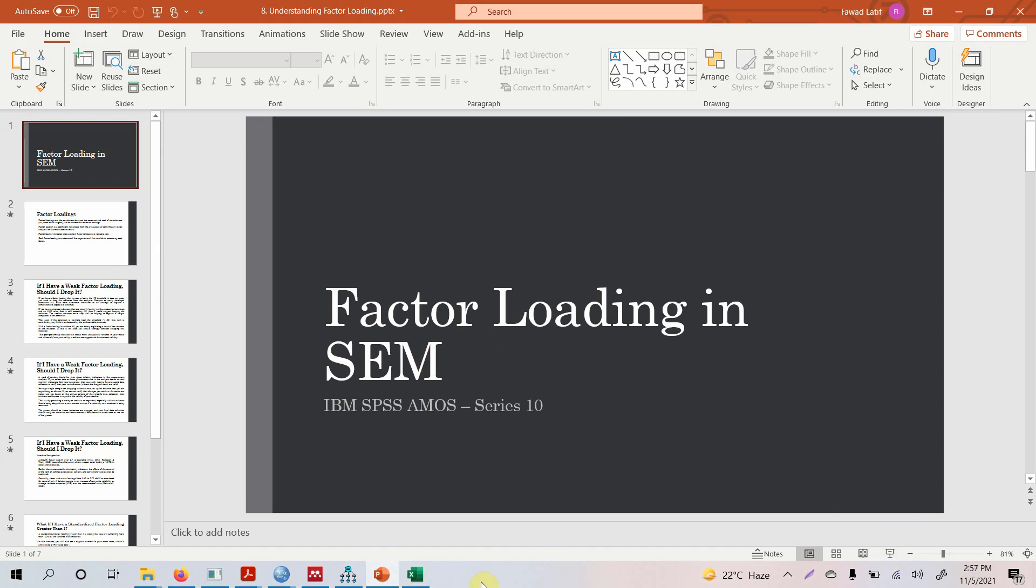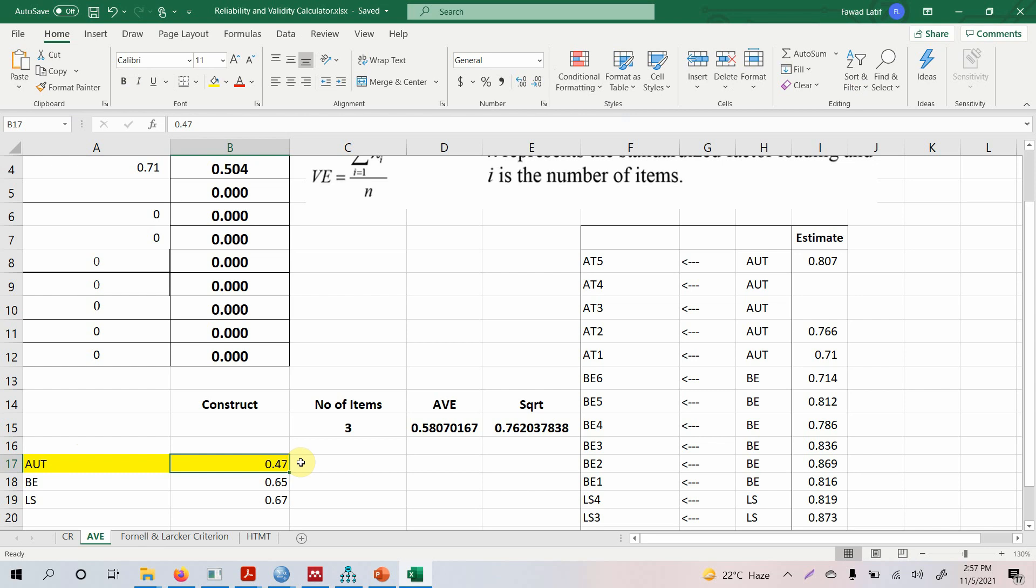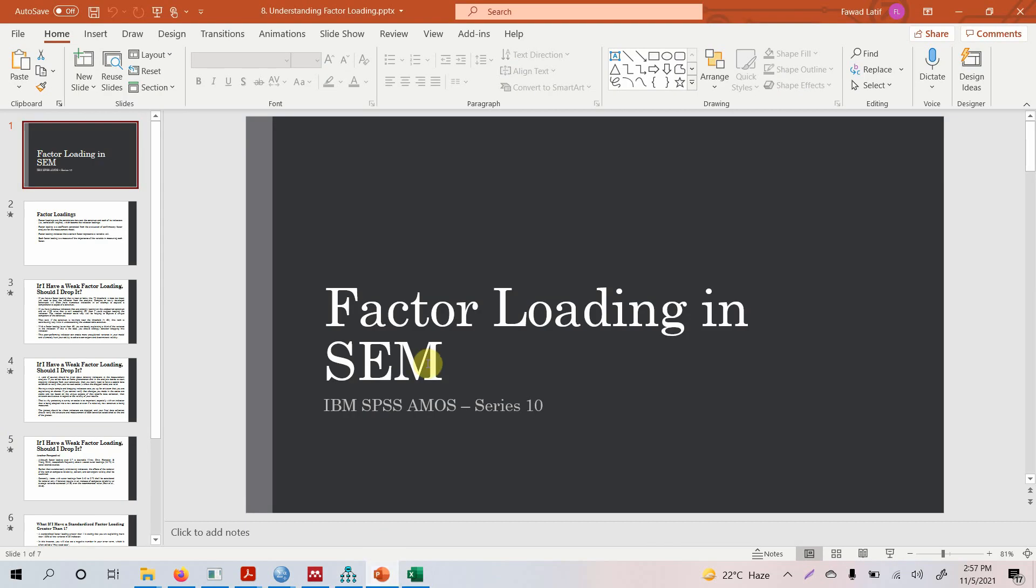What to do when you've got low loadings? Although there is a reference that if your composite reliability is greater than 0.70, you can still say that convergent validity is established when you have AVE for the construct greater than 0.40. However, it is still important to discuss further the factor loading and how to deal with it in SEM.